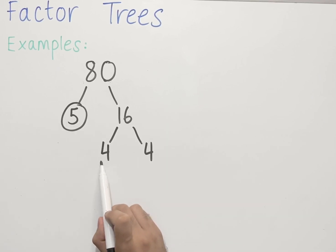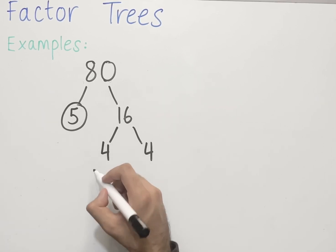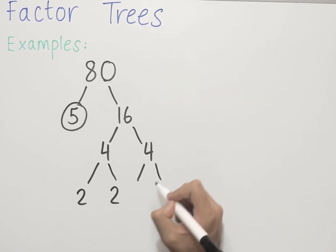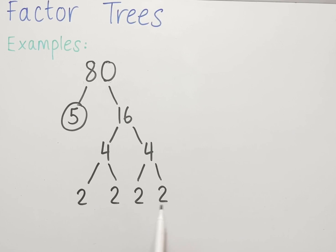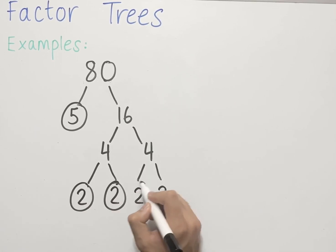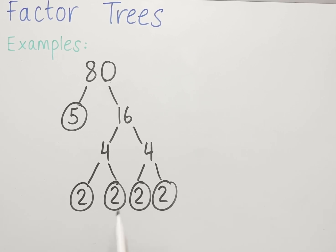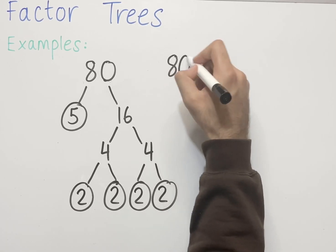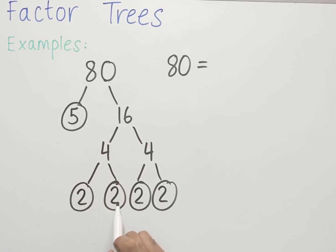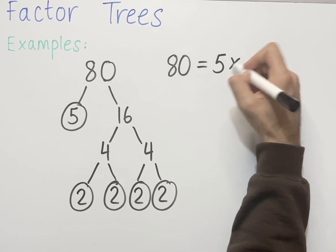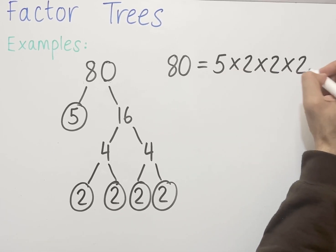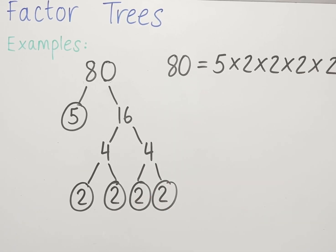4 is not a prime number, so we can factorise both of these further. Two numbers that multiply to make 4 are 2 and 2, so two branches with the number 2 coming out. All of these are prime numbers, so we can circle them. Since we don't have any other numbers to factorise further, we can write 80 as a product of its prime factors: 80 is equal to 5 times 2 times 2 times 2 times 2. Hopefully you'll notice that this is the same answer we got in the previous method.